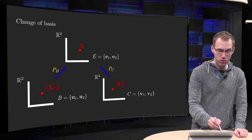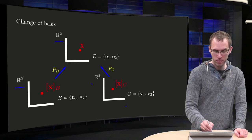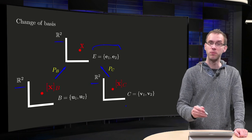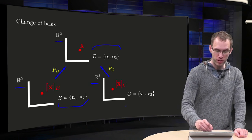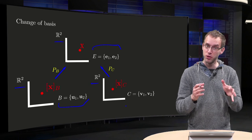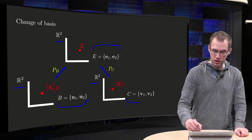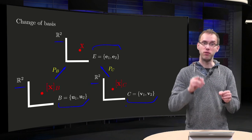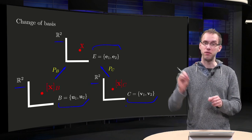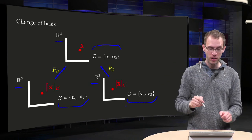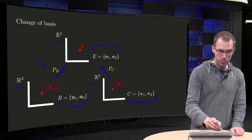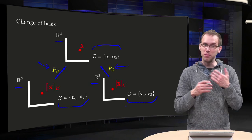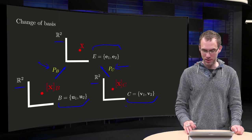We have three versions of R2. On the top we have the standard basis for R2. On the lower part we have basis b consisting of u1 and u2, and here a basis c consisting of v1 and v2. We know how to go from x_b to x and from x_c to x. For that we have the matrices P_b and P_c. But can it be done in some more direct way?